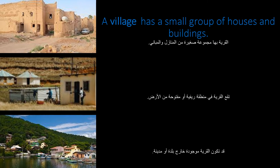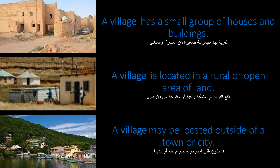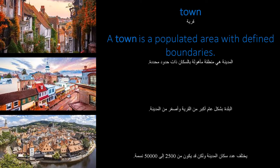A village has a small group of houses and buildings. A village is located in a rural or open area of land. A village may be located outside of a town or city.